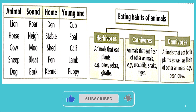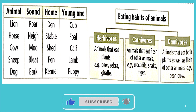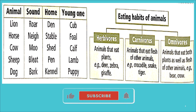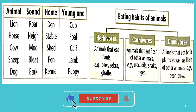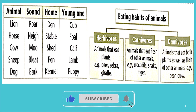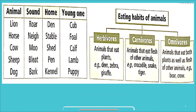Omnivores are animals that eat both plants as well as the flesh of other animals — for example, bear, crow. There is one more category: scavengers. They are animals that eat the flesh of dead bodies of other animals — for example, vulture, eagle, etc.